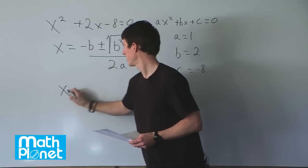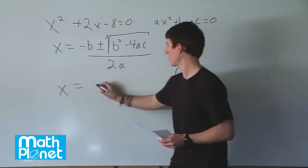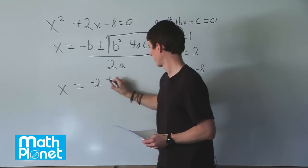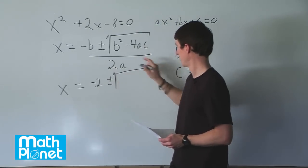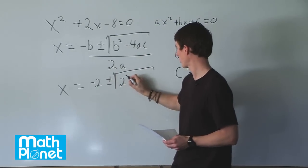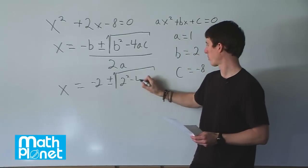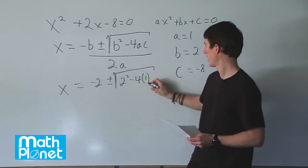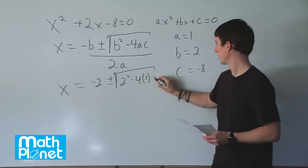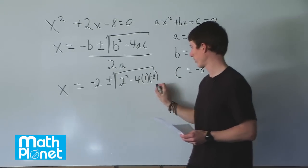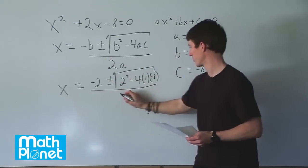So this gives us x equals negative b, which is negative 2, plus or minus the square root of b squared, which is 2 squared, minus 4 times a, which is 1, and c, which is negative 8, all over 2 times a, which is just 2.